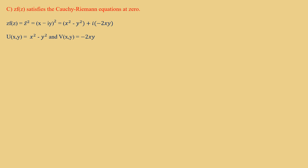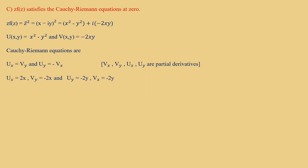Now Option C: z·F(z) satisfies the Cauchy-Riemann equations at 0. We find z·F(z) = z̄² = (x − iy)² = x² − y² − 2ixy. So u(x,y) = x² − y² and v(x,y) = −2xy. The Cauchy-Riemann equations are u_x = v_y and u_y = −v_x. Computing the partial derivatives: u_x = 2x, v_y = −2x, u_y = −2y, and v_x = −2y.